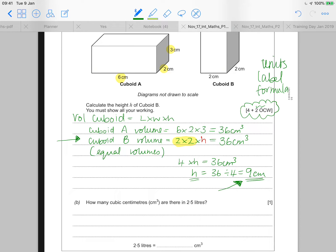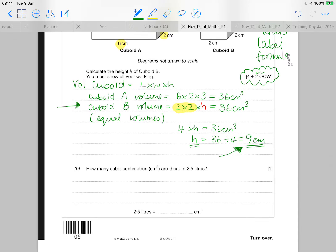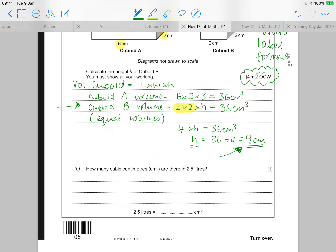Part B of the question. It's only a one mark question, but unfortunately quite a lot of people get these little questions wrong. It's based on a fact. It asks you about how many centimetre cubes are there in 2.5 litres. Nothing to do with Part A, but all to do with some metric conversions.